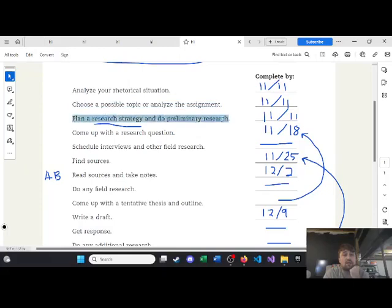Then plan a research strategy and do preliminary research. Planning that strategy, that's sort of what we're doing now. We're trying to schedule the research project. Doing preliminary research is going to take a little more time. So, you might give yourself a window for that. But that's just preliminary. So, don't give yourself too much time.